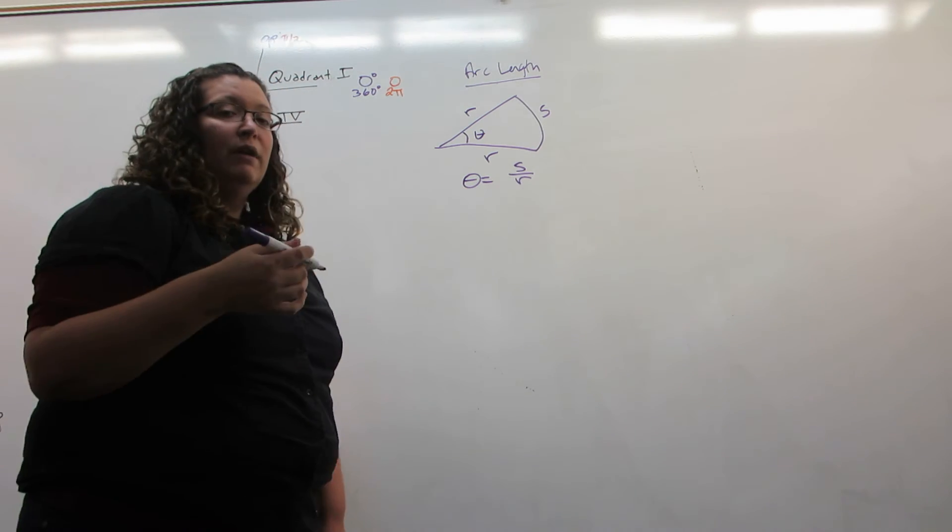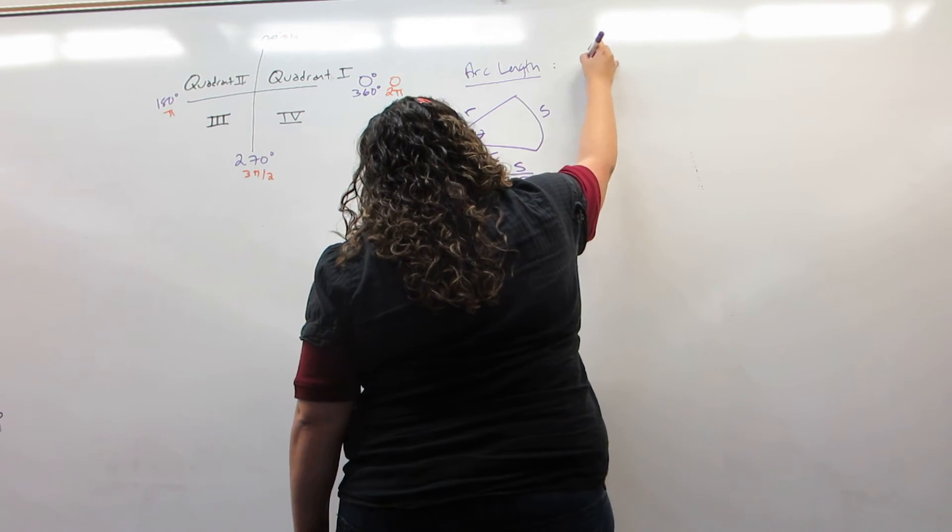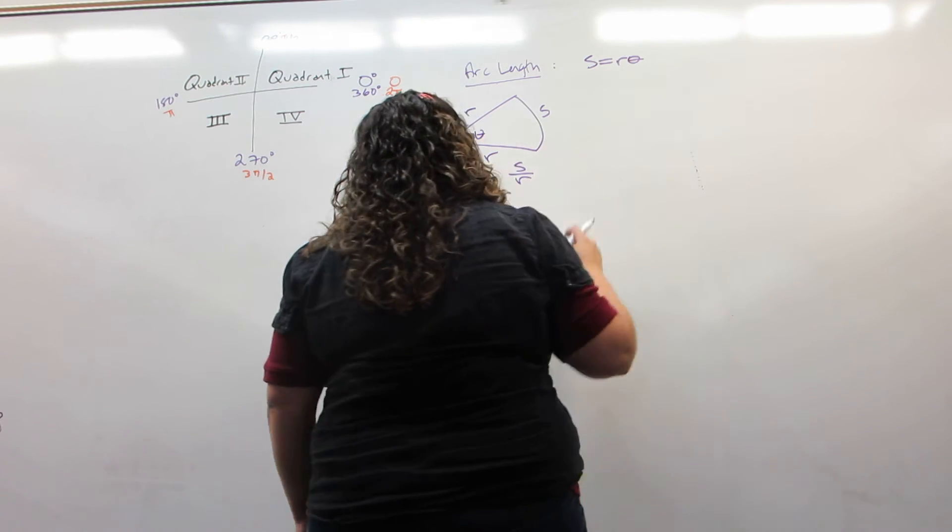This can be rewritten to become the arc length formula. So the arc length formula is that s equals r theta.